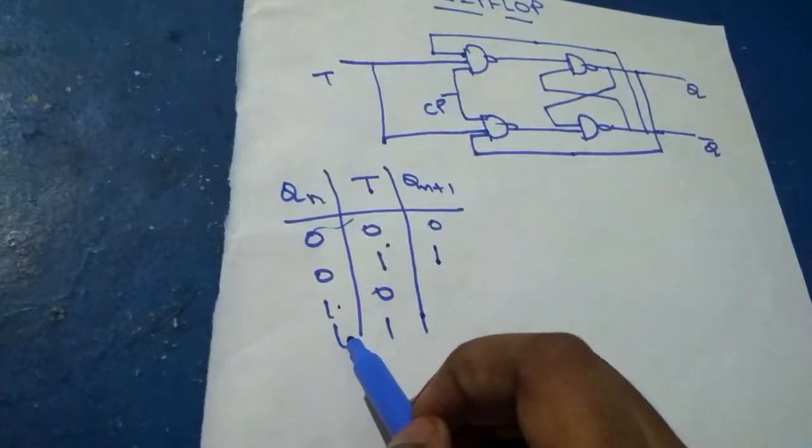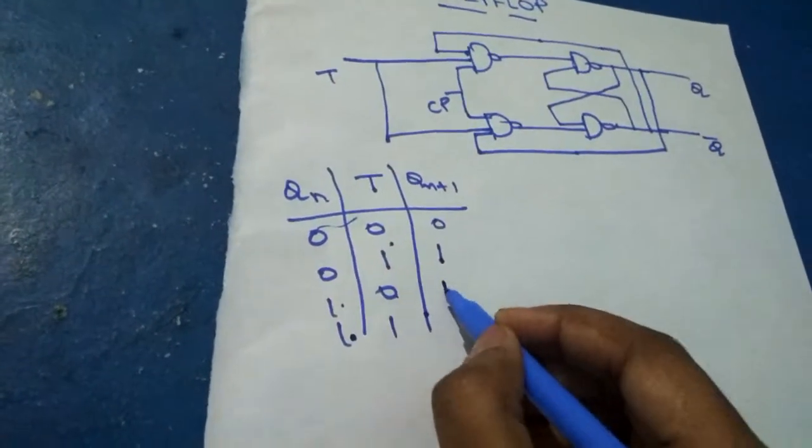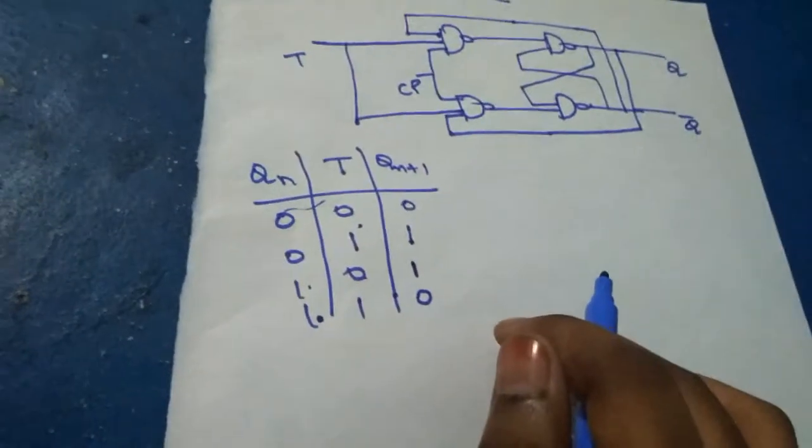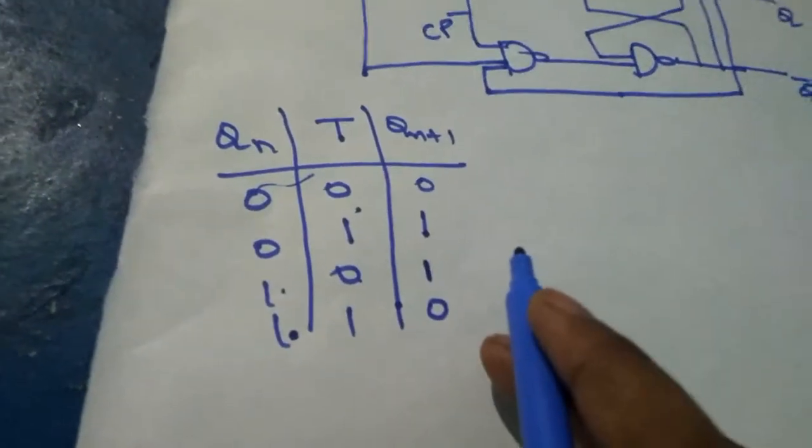And when 1 is present in the present state, then the complement of T occurs in the next state. This is the rule of the T flip-flop and this is the truth table of the T flip-flop.